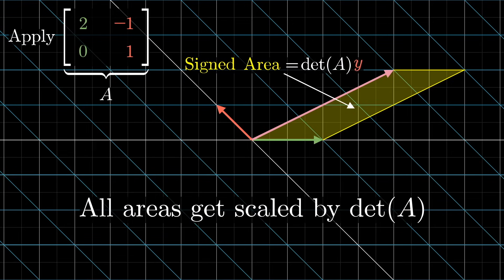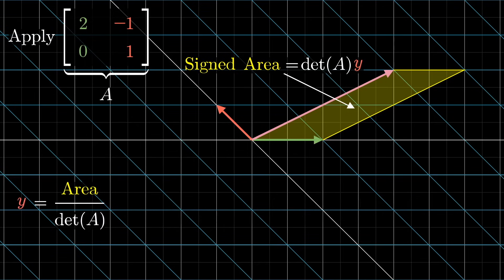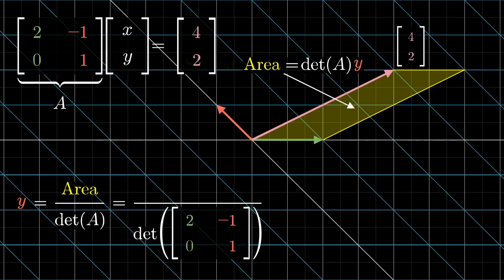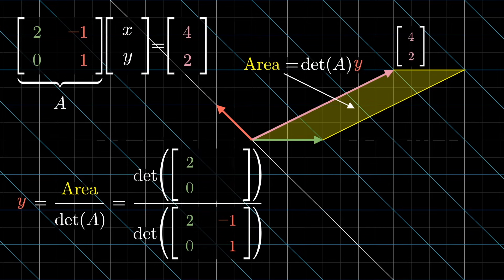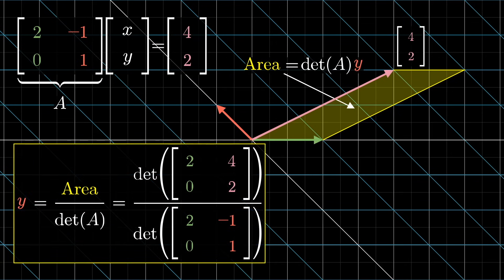So that means we can solve for y by taking the area of this new parallelogram in the output space, divided by the determinant of the full transformation. And how do you get that area? Well, we know the coordinates for where the mystery input vector lands — that's the whole point of a linear system of equations. So what you might do is create a new matrix whose first column is the same as that of our matrix, but whose second column is the output vector, and then you take its determinant. Just using data from the output of the transformation — the columns of the matrix and the coordinates of our output vector — we can recover the y-coordinate of the mystery input vector, which is halfway to solving the system.